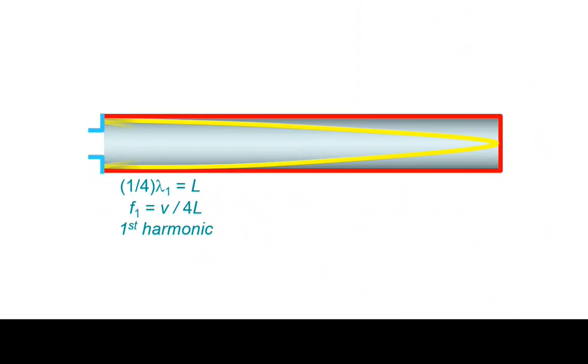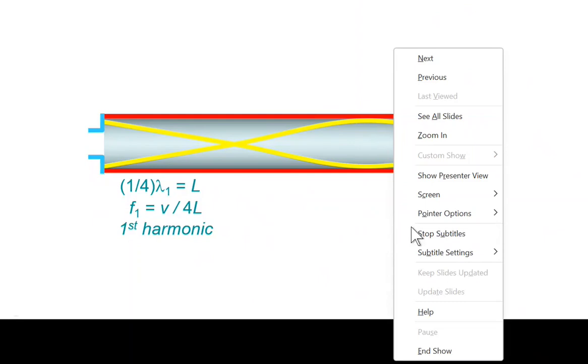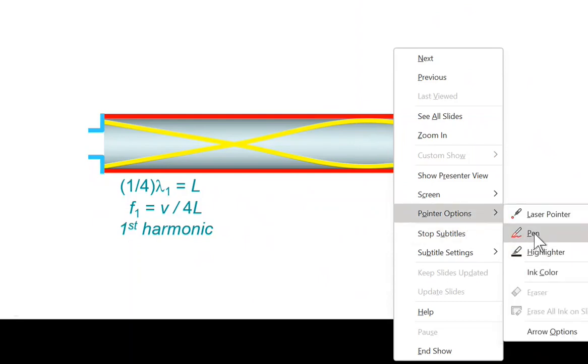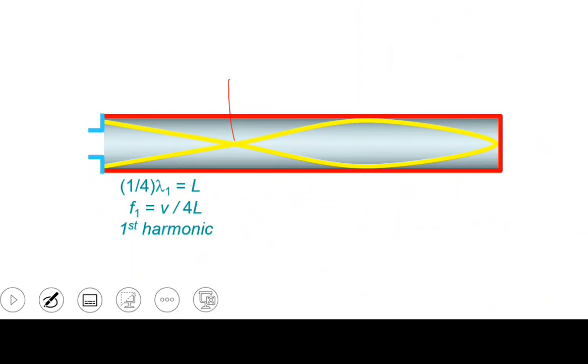Now second harmonic. Here, if I can write. So from here till here, this is lambda over 2. And from here till here, this is lambda over 4. So here I have 3 quarter lambda. 3 quarter lambda. So if I need lambda, it will be 4 over 3.